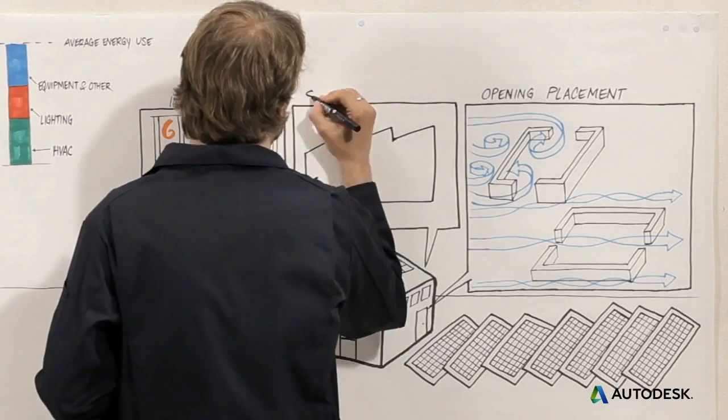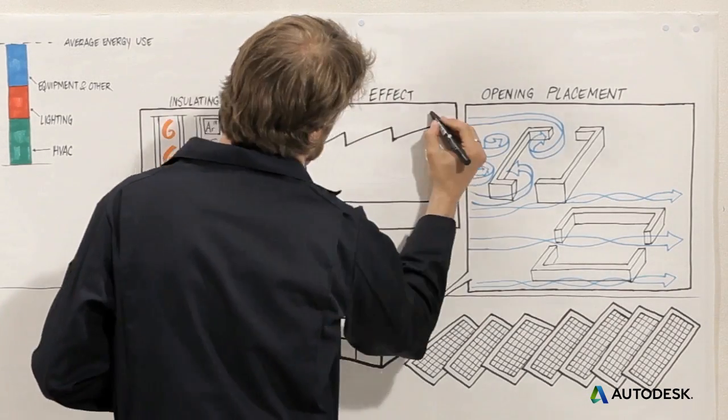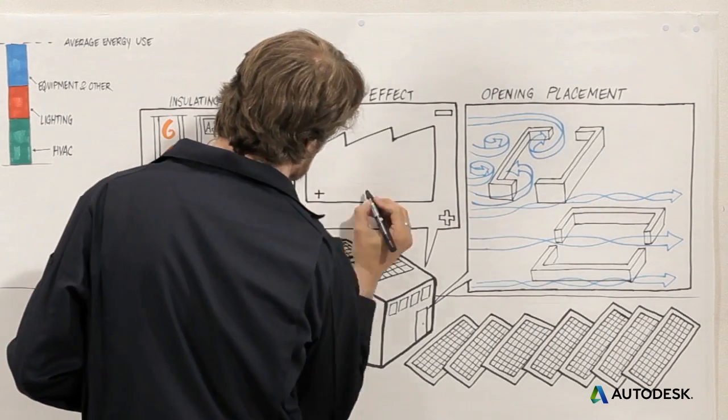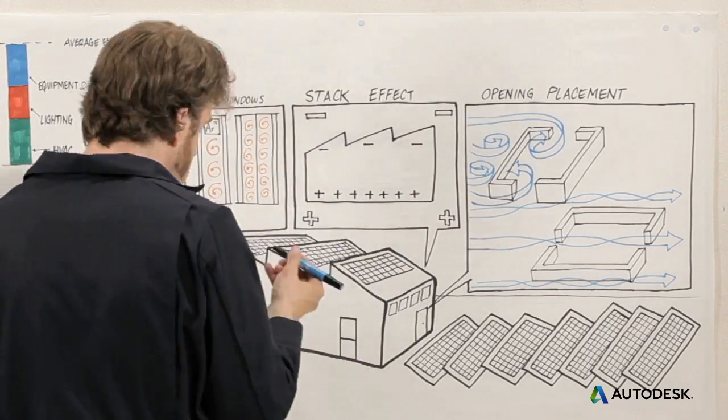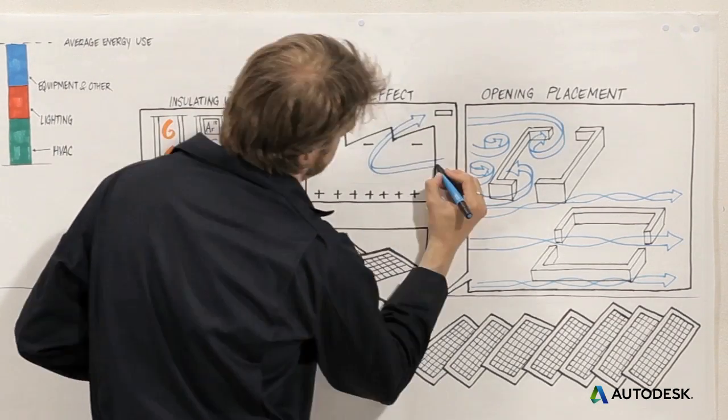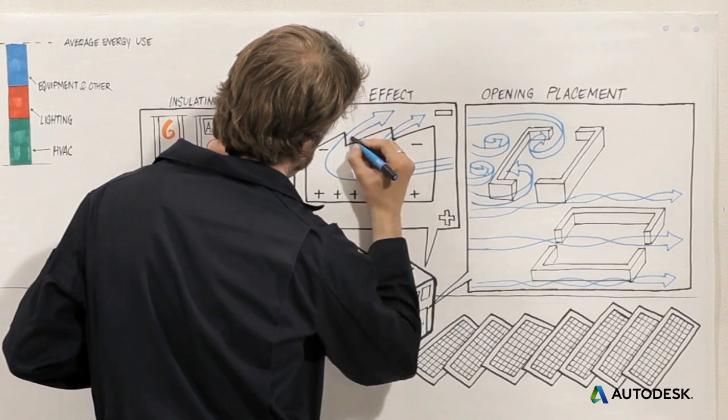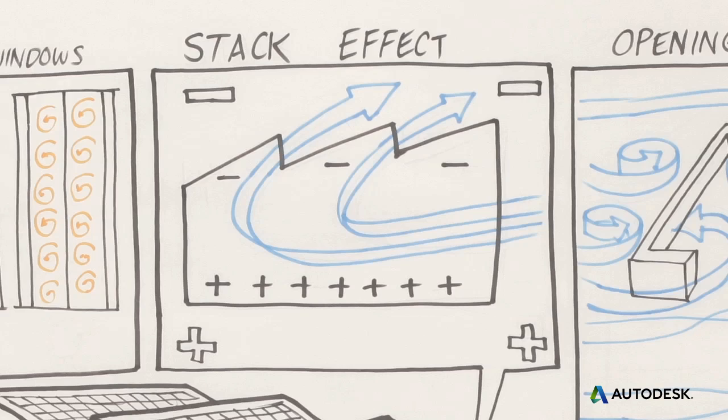Another principle of natural ventilation is called the stack effect. Wind and heat make air pressure lower farther from the ground. Higher pressure air then wants to move there, so if you have windows at the top and the bottom, air will naturally flow upwards with no fans needed.